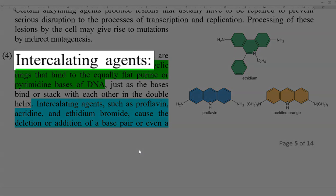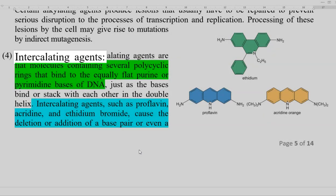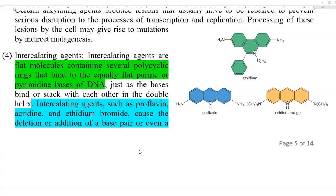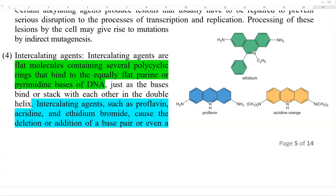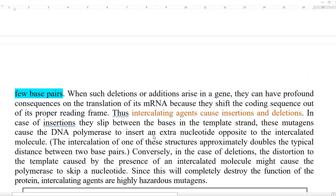The next one is intercalating agents. They are flat molecules containing several polycyclic rings that can bind between the equally flat purine or pyrimidine bases in the DNA, just like bases stacking on each other in a double helix molecule. Intercalating agents include proflavin and ethidium bromide — ethidium bromide is commonly used in the laboratory to visualize DNA. They can cause the deletion or addition of base pairs, and sometimes they can delete a few base pairs in the nucleotide strand. When such deletions or additions arise in a gene, they have a profound influence on the translation of its mRNA because the coding sequence will be shifted — that is, a frameshift mutation will result. Thus, intercalating agents cause insertion and deletion type mutations.